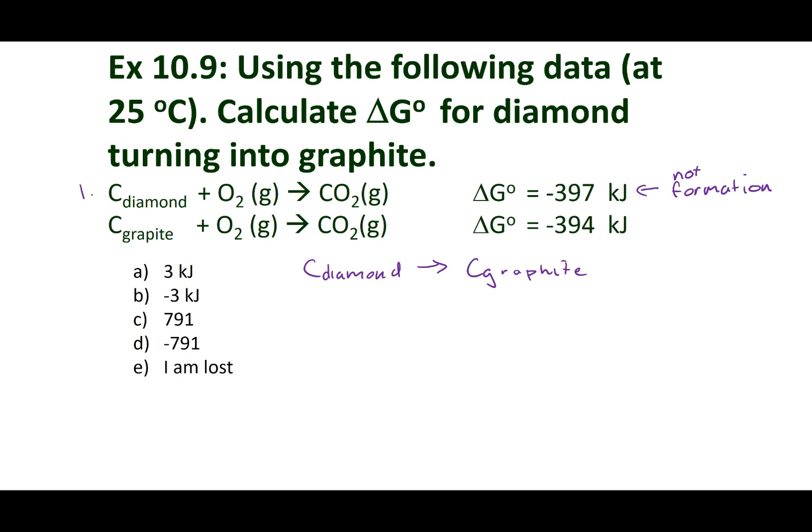I'm going to take reaction one and write it as is because that has carbon diamond as my reactant and it's on the proper side. Now, for the second reaction, I want to flip this reaction because I want graphite on the product side. So I'm going to write CO2 goes to C graphite plus O2.